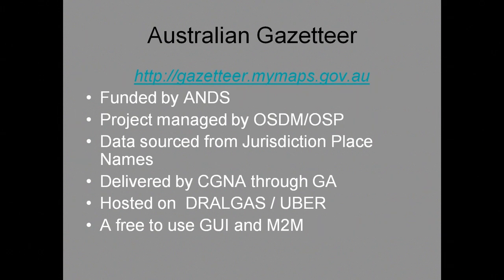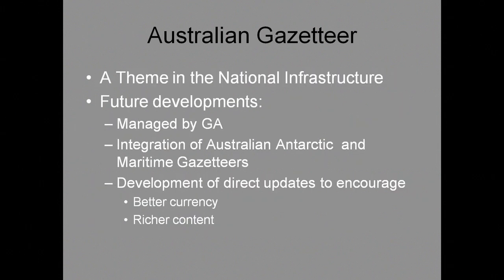The remit of OSP is in part to build eleven data themes with continental coverage which give context to business information and research information, enabling practitioners to simply view their data in the context of these eleven themes. The national Gazetteer is one of those themes, and with ANDS's assistance and funding we've gone a long way toward providing the first of these things into a national context.